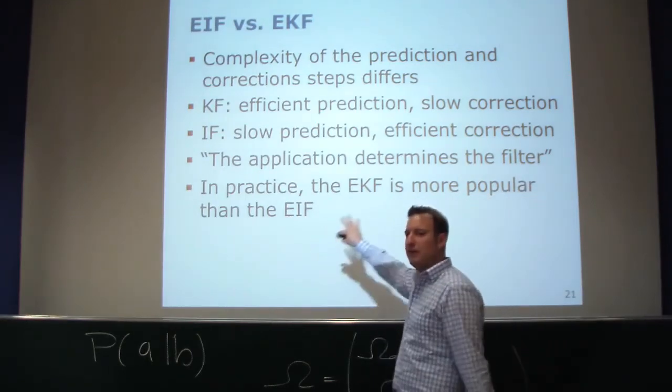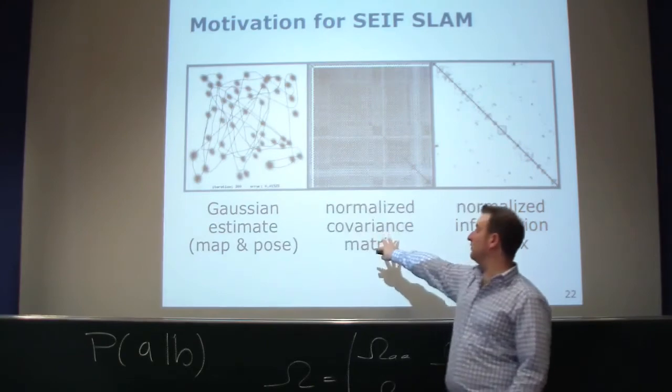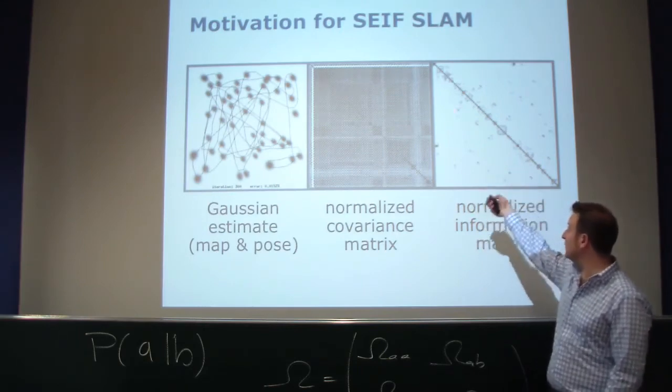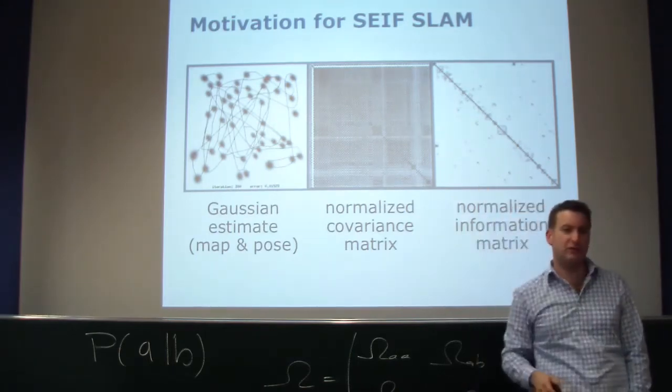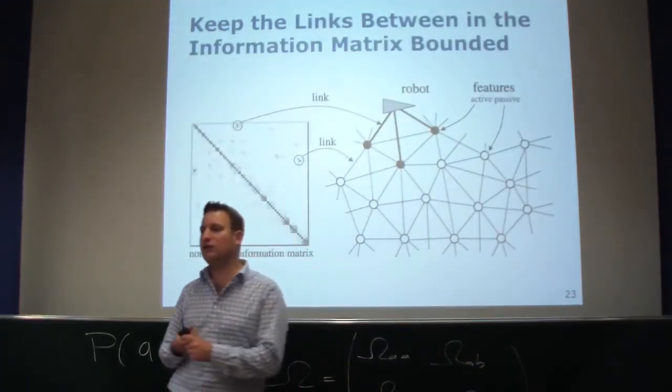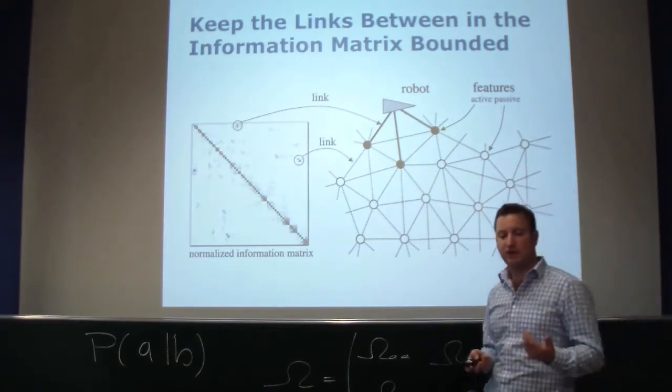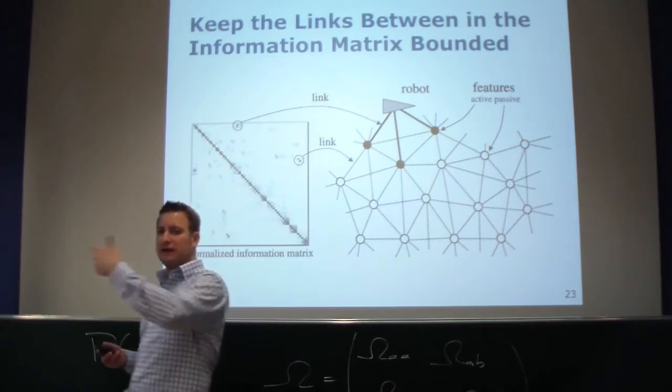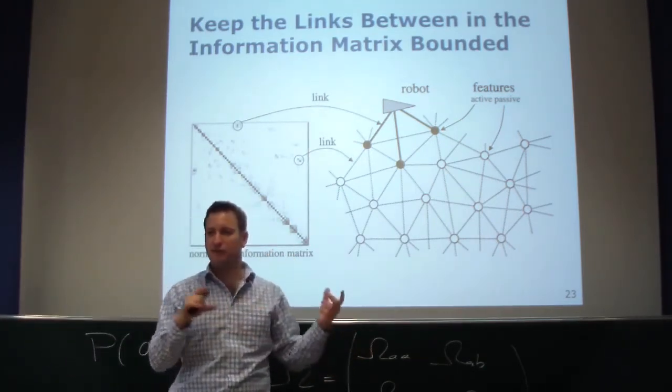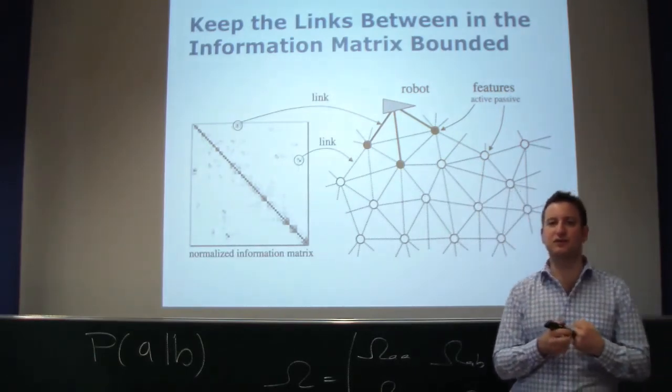However, the EIF is one step towards the sparse extended information filter, what we covered last week and today. The key idea was, if you look to the covariance matrix, the inverse of the covariance matrix, the information matrix, you can typically approximate that without too many approximation errors as a sparse matrix. This was done by maintaining only a limited number of active landmarks between the robot and these active landmarks. While the robot is moving through the environment, the set of active landmarks changes, and in the end, you do the full update only with the robot's pose and those active landmarks. As soon as a landmark becomes passive from active, the sparsification step eliminates the direct links between the robot's pose and those features or landmarks which become passive, and this results in a sparse information matrix.